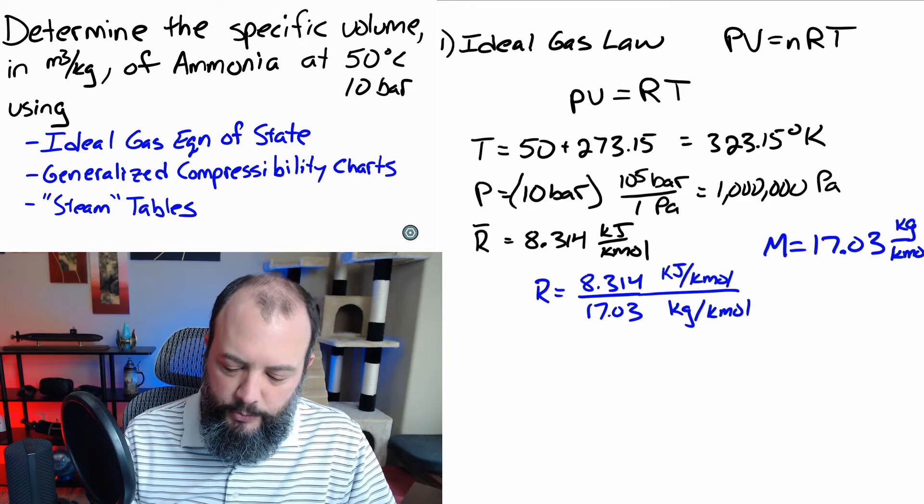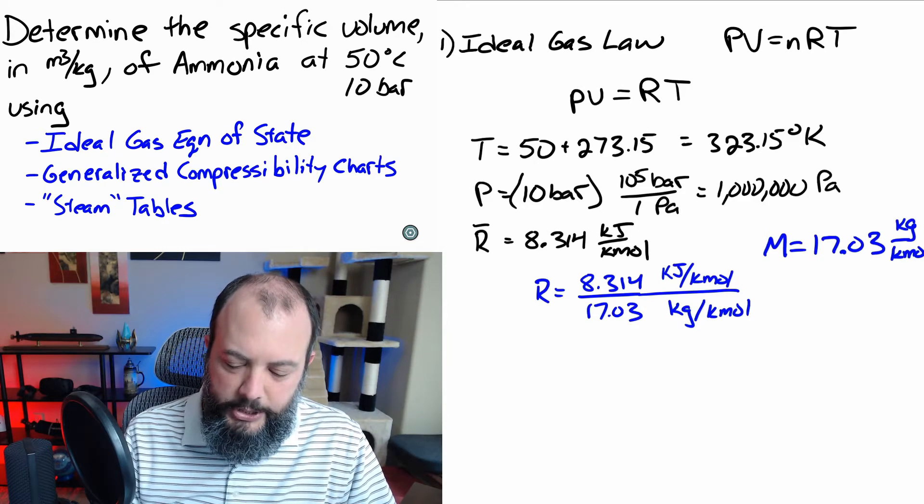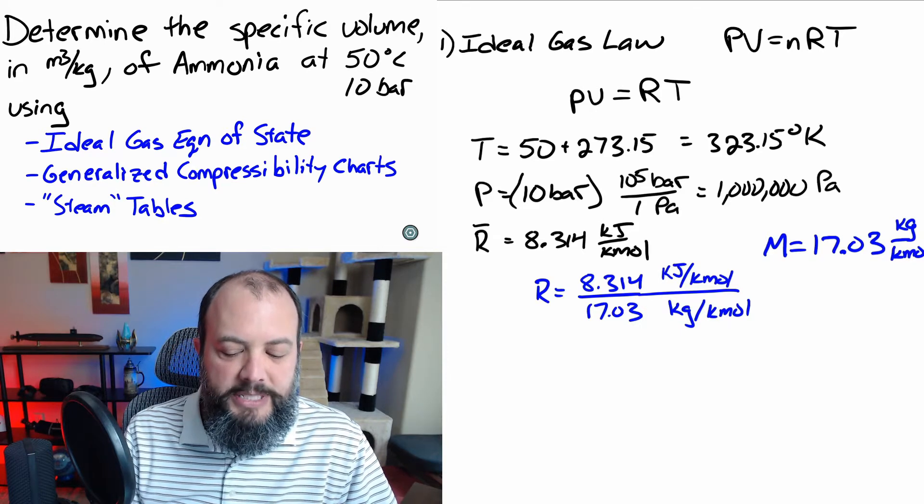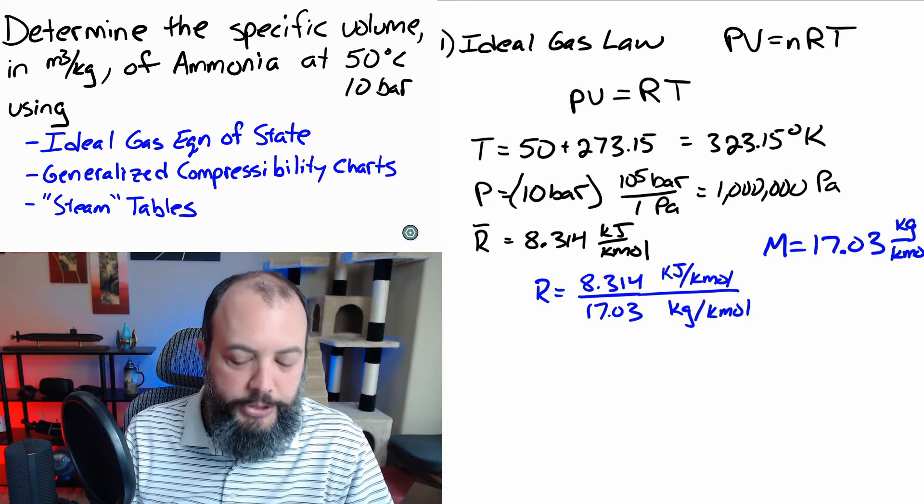So, I'll put a note over here on the side. We can see from this table that the molar mass for ammonia is going to be 17.03. And now let's see where that gets us. We're going to keep careful tabs on the units, since that's usually the most complex part.